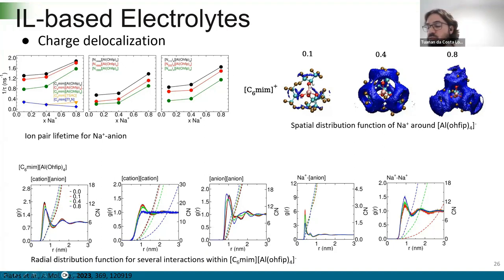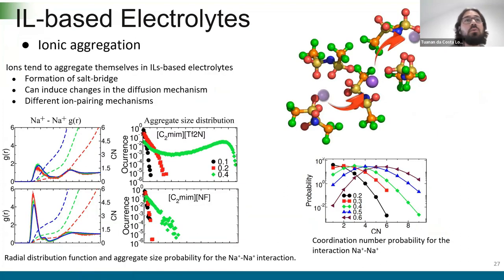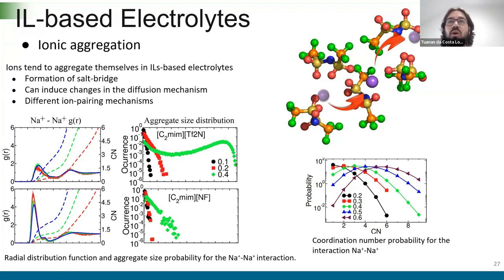Looking at the spatial distribution function of sodium around the aluminate anion: when we increase sodium concentration, sodium can literally occupy all positions around the anion. This means that when solvation shells are closer to each other with aggregation, sodium can go through different solvation shells. In ionic liquid-based electrolytes, small metal ions like lithium and sodium can interact with more than one anion at the same time, and the anion can also interact with more than one sodium — forming a bridge structure. The aggregate size distribution shows that increasing sodium concentration increases the aggregate size, leading to different dynamics in the system.